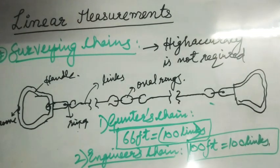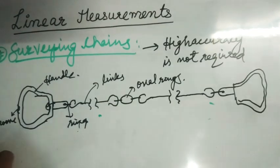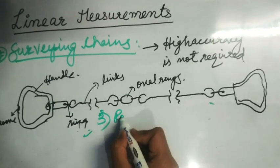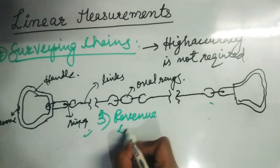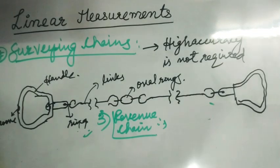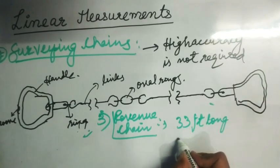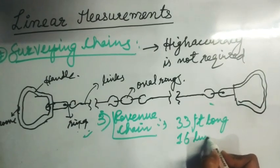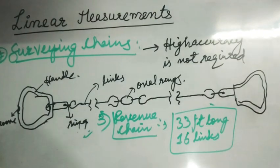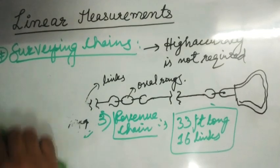The third special type is a revenue chain. A revenue chain is 33 feet long and consists of 16 links. These are the special types of chains whose specifications you must remember.